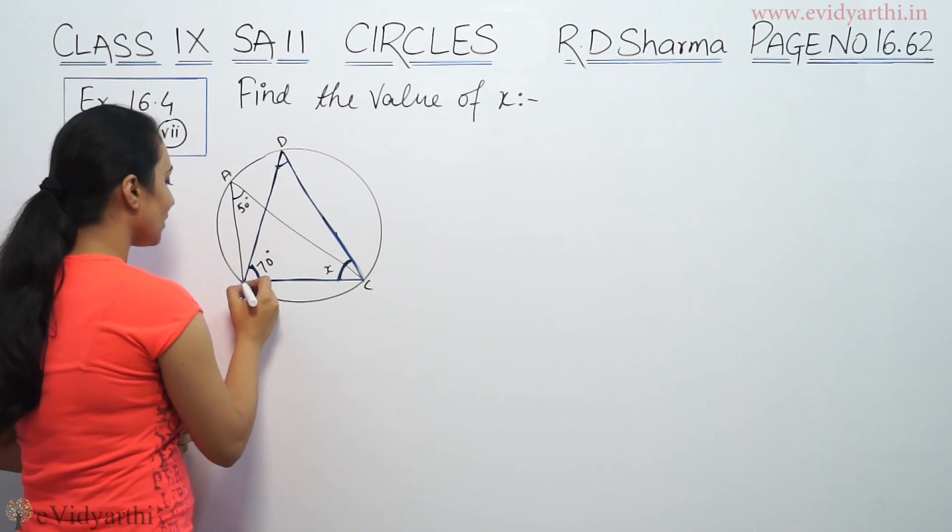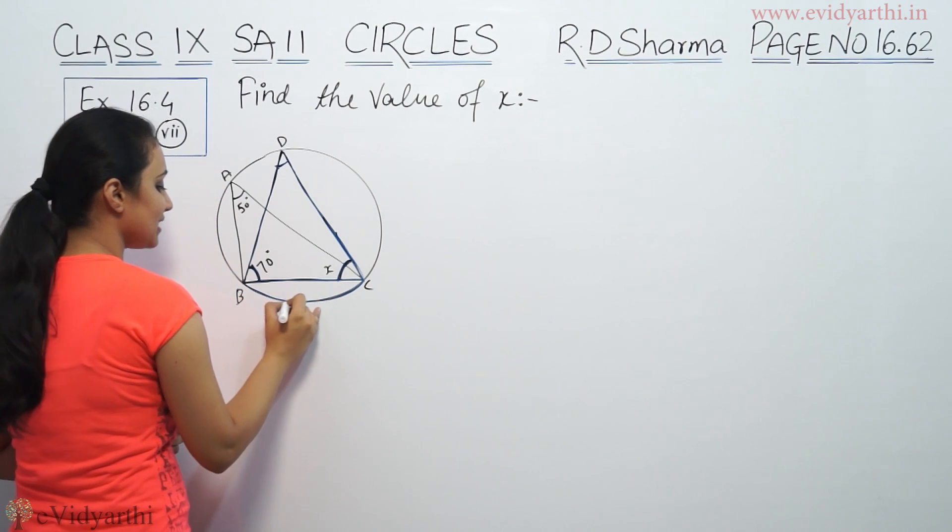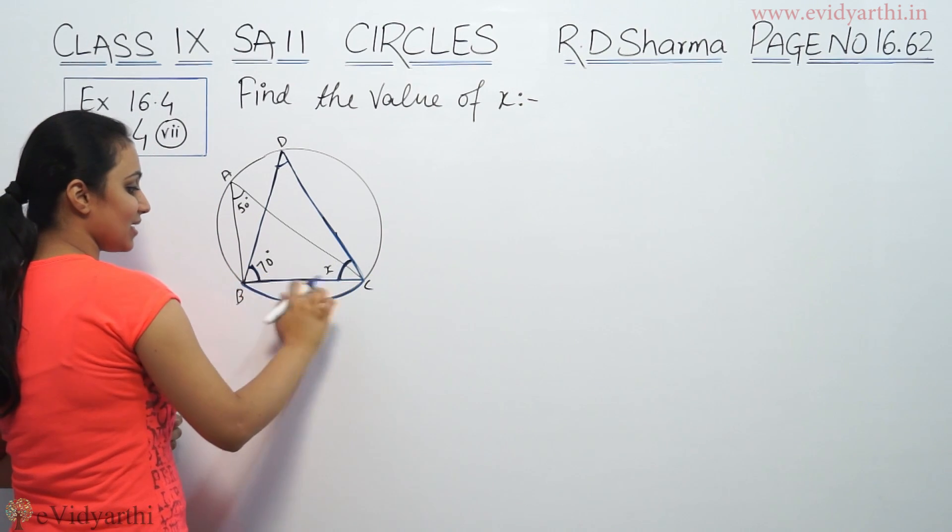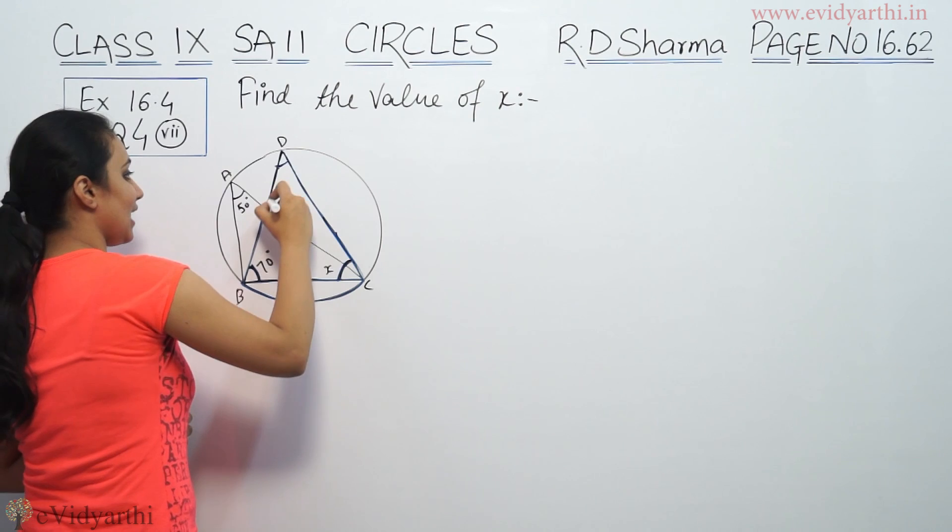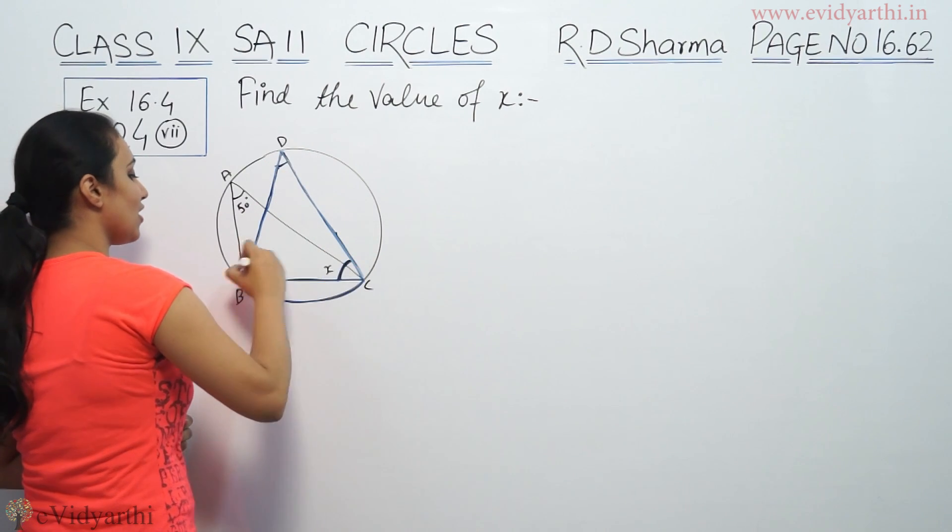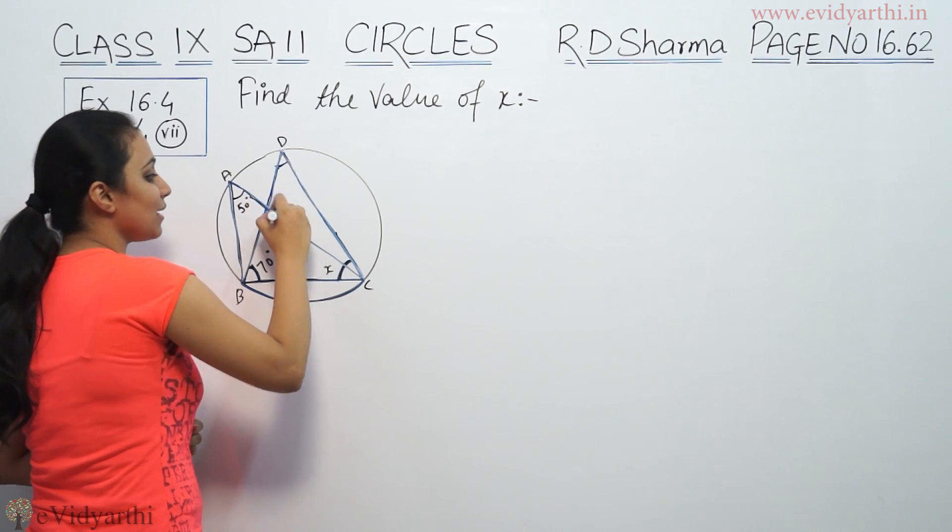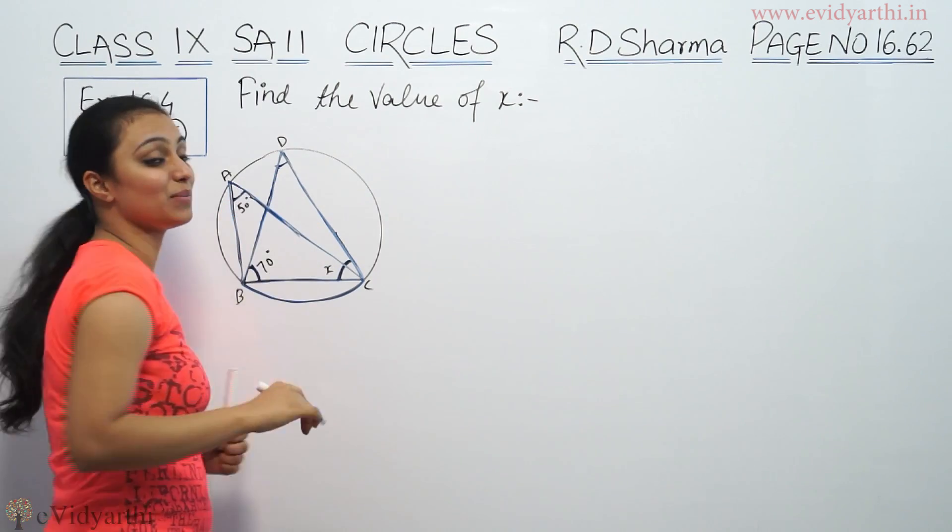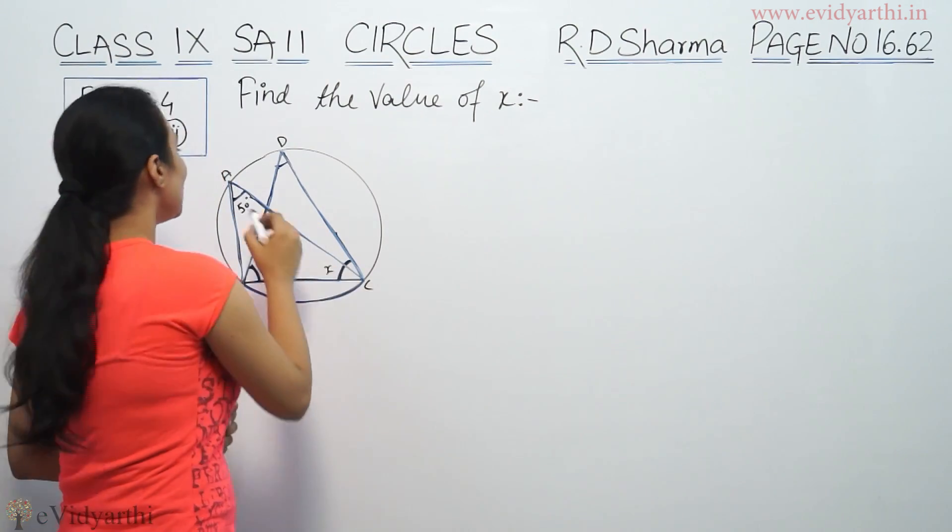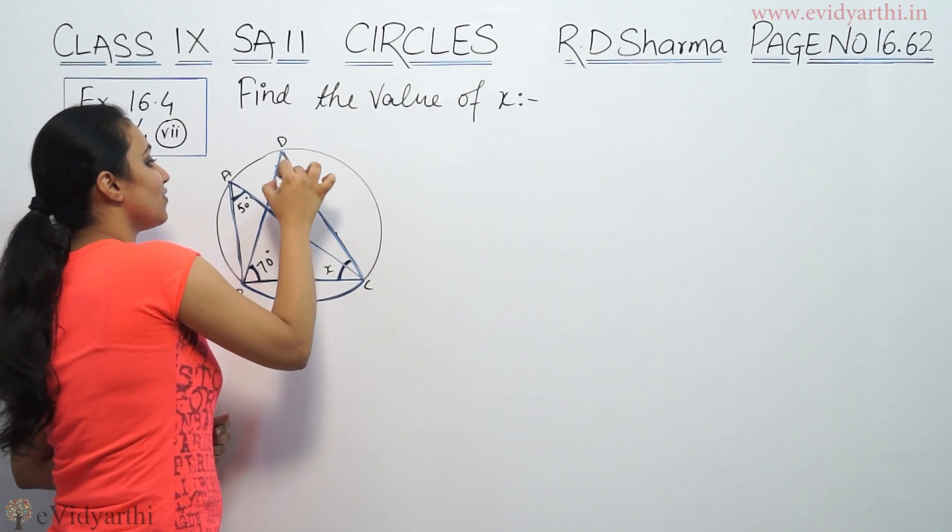Now we can see that in one segment, you see this is DBC. So in this segment, this angle is DBC and this angle is DBC. So angles in the same segment are equal. In one segment, the angles are equal. So if it is 50 degrees, it will be 50 degrees.